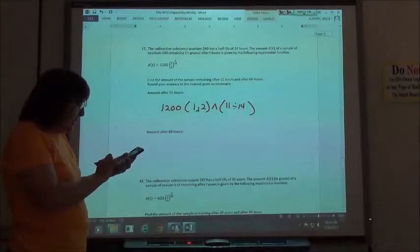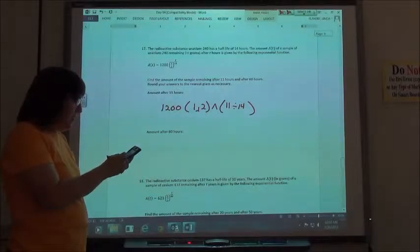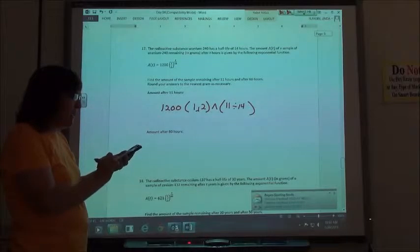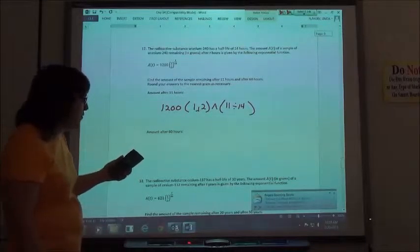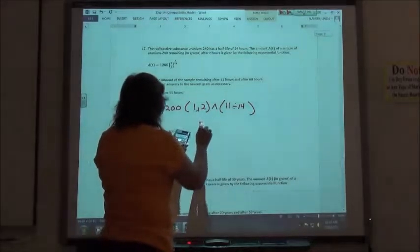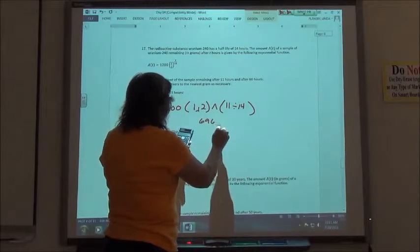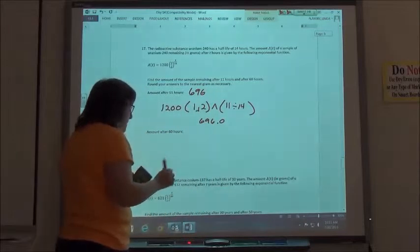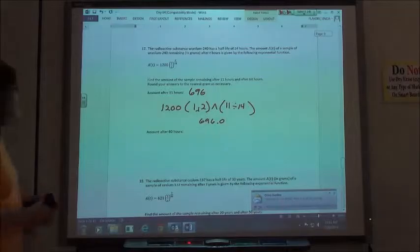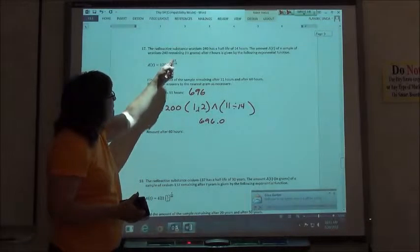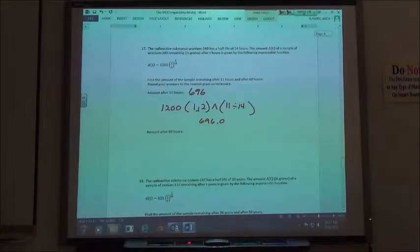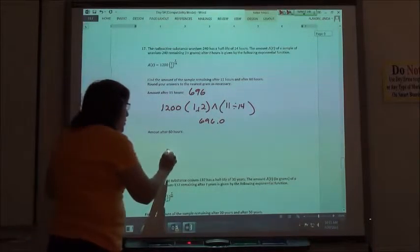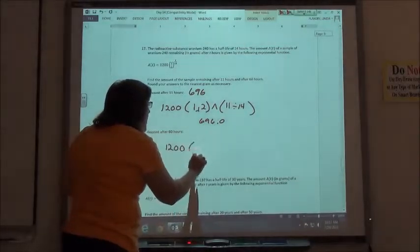So in this case, we're not going to quite do one half-life. Half of 1,200 is 600, so we should have more than 600 left if we get it punched in correctly, just to kind of estimate to know where we're at. So 1,200, parentheses, my half-life, to the 11 fourteenths. So 11 divided by 14, or 11 fraction 14, it's easier for me to hit the division. So I came up with 696.0, and so 696 rounding to the nearest gram.